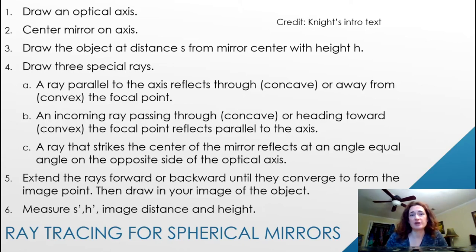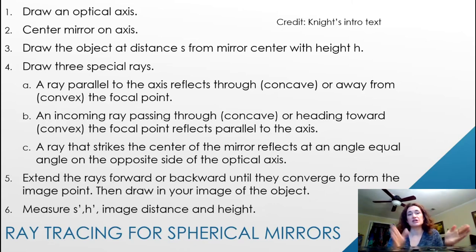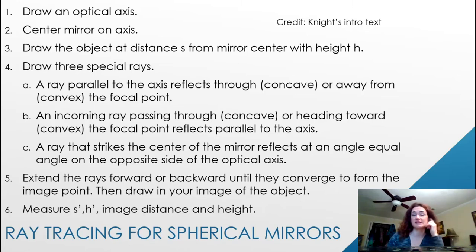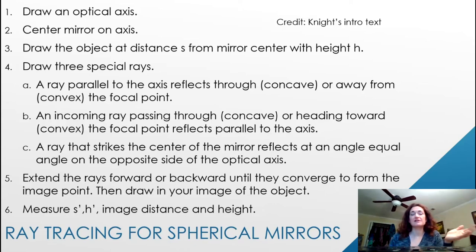We'll use similar variables to the thin lens equation, where s is the distance from the object to the center point of the mirror on the optical axis, and h is the height of the object. Then, just like with thin lenses, you're going to draw three special rays — though they're drawn slightly differently for mirrors versus lenses.